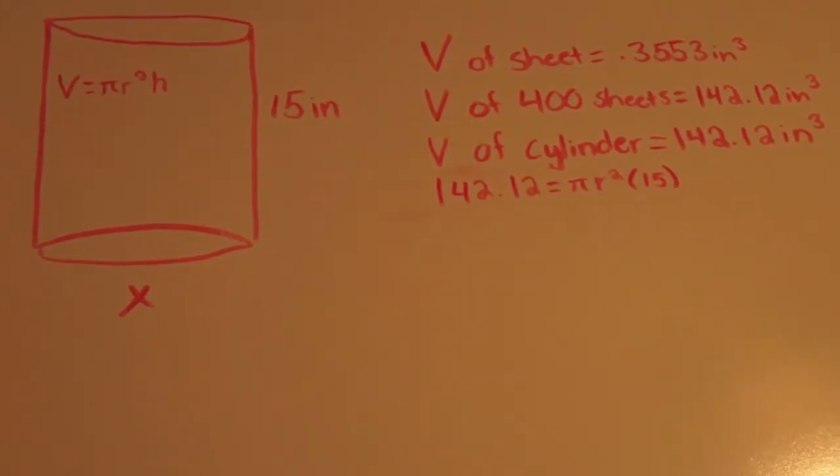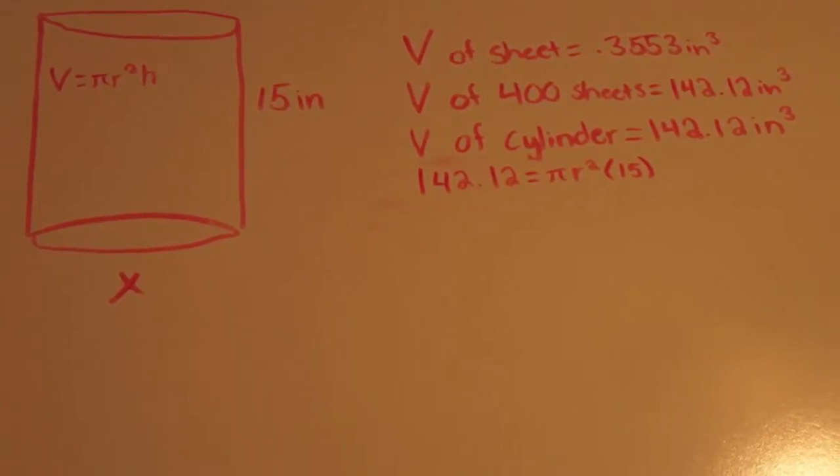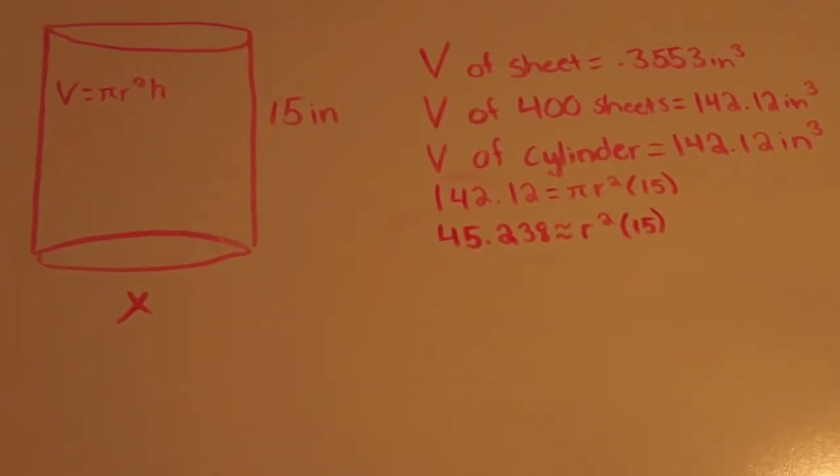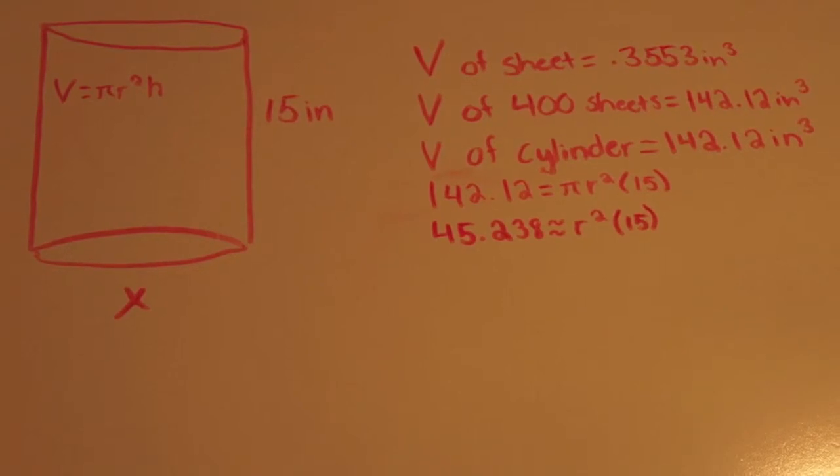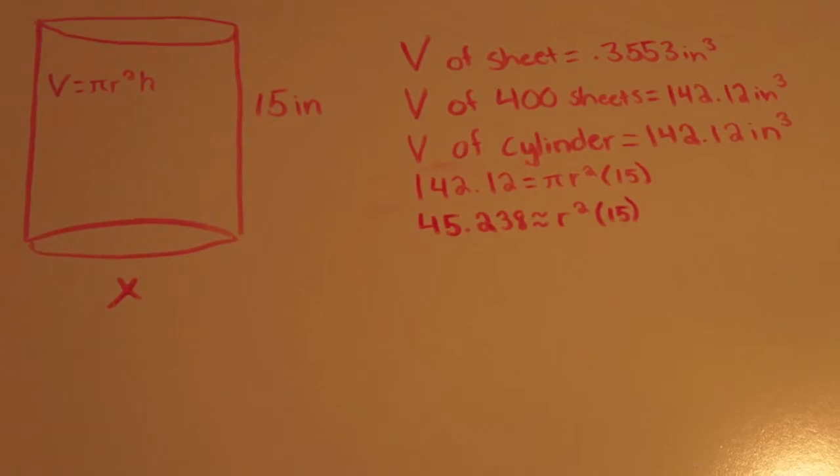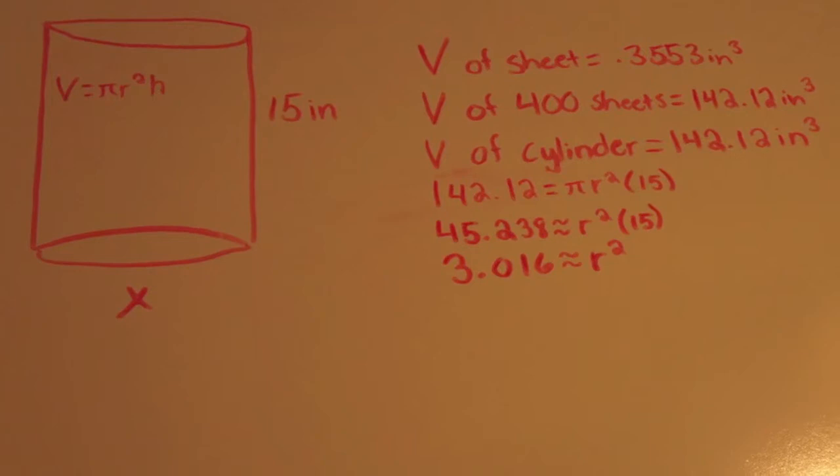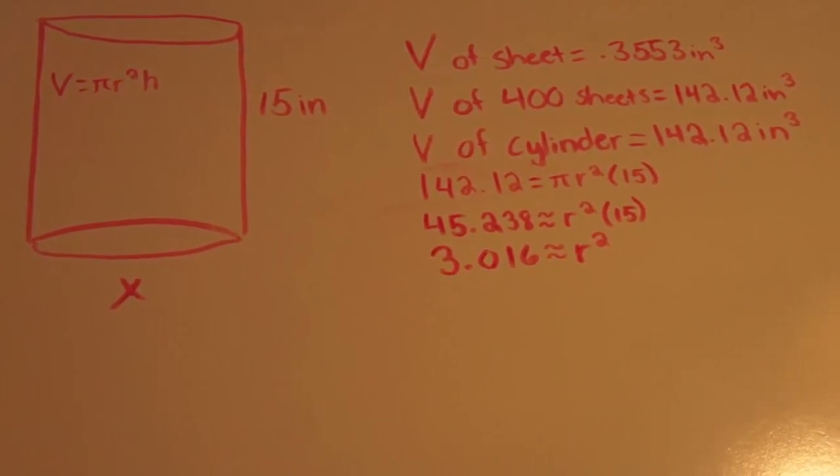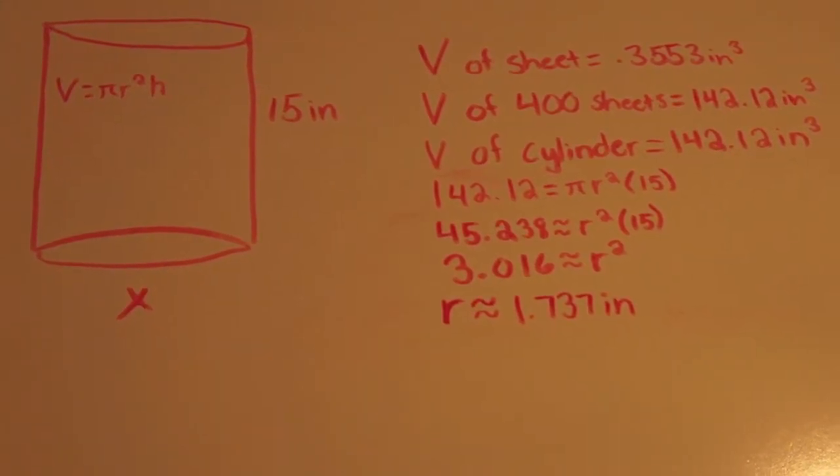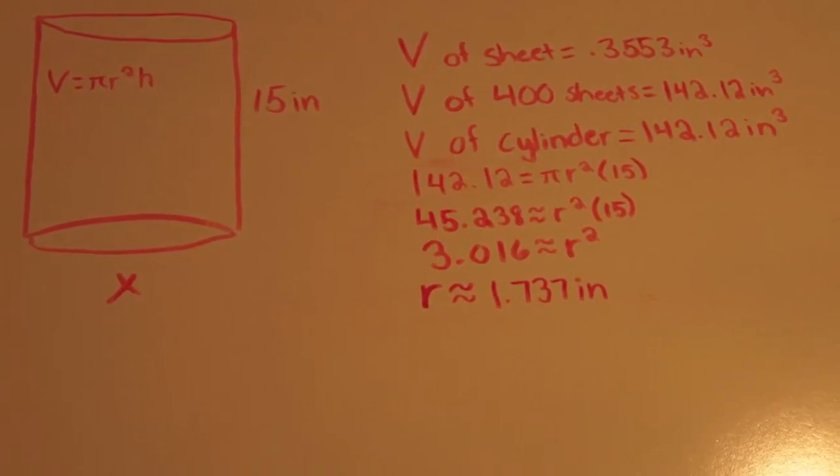The formula for volume of a cylinder is pi r squared times the height, so 142.12 is equal to pi r squared times 15. If I divide 142.12 by pi I will get that r squared times 15 is approximately equal to 45.237 if I divide that number by 15 I will get that r squared is approximately equal to 3.016. If I solve for the square root I will get that the radius of the figure is approximately 1.737 inches.